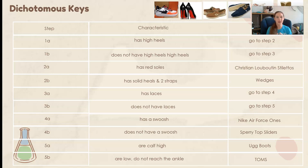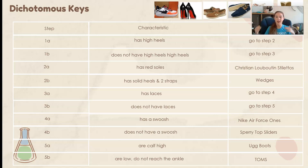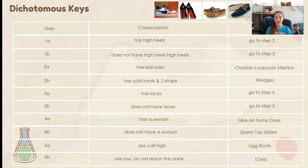The first thing we're going to talk about is what we use a dichotomous key for. Scientists can use a key, which is essentially a set of steps that help them classify what an organism is. They look at different characteristics of many different organisms and we start looking at the process of elimination — does it have this? If yes, go here. If no, go there — until we get our characteristics narrowed down to a very specific organism.